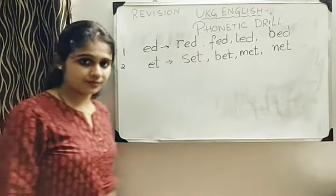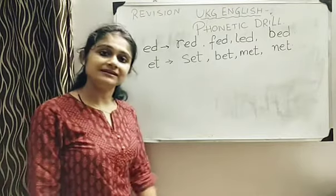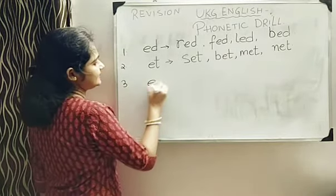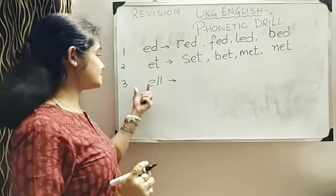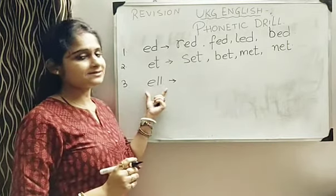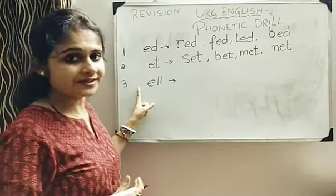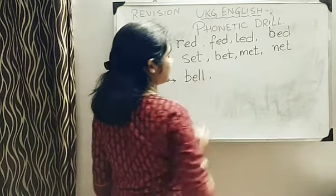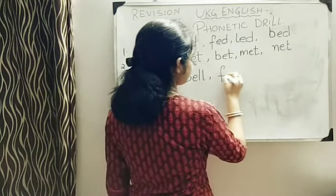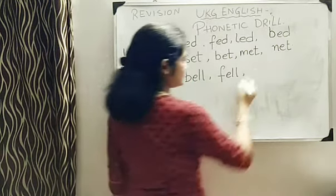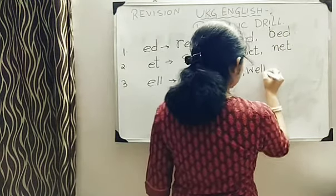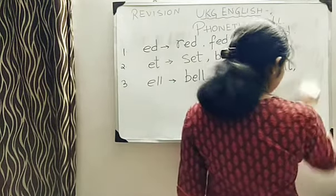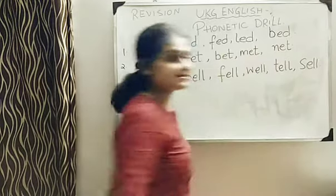So these are all easy words that you have already done and learnt. Next we will do E-L-L. This is also easy. So these 3 letters are your ending letters. You have to join or you have to prefix one letter before this. Like B-E-L-L, bell. F-E-L-L, fell. W-E-L-L, well. T-E-L-L, tell. S-E-L-L, sell.